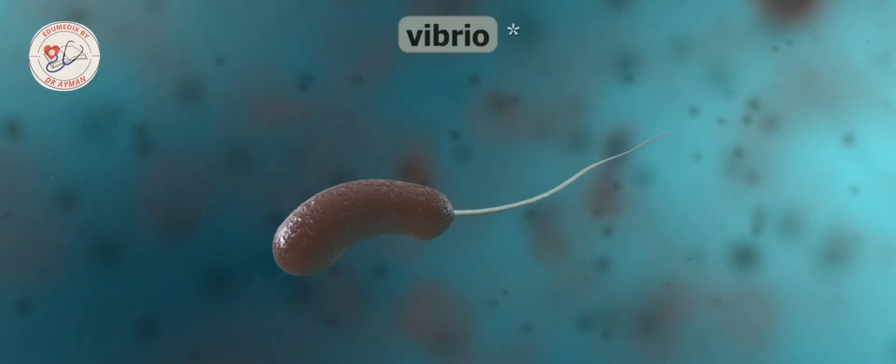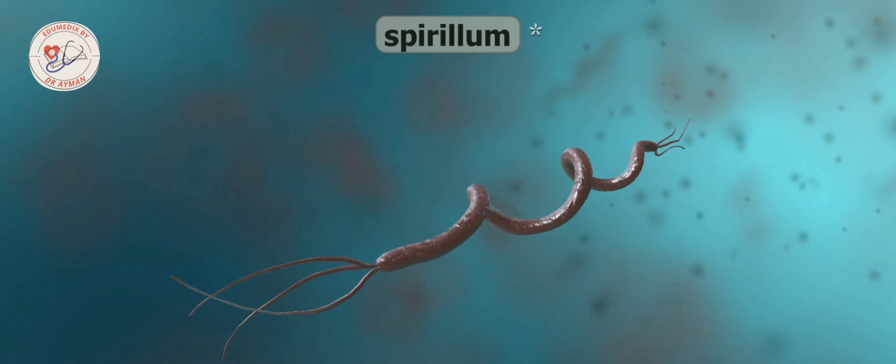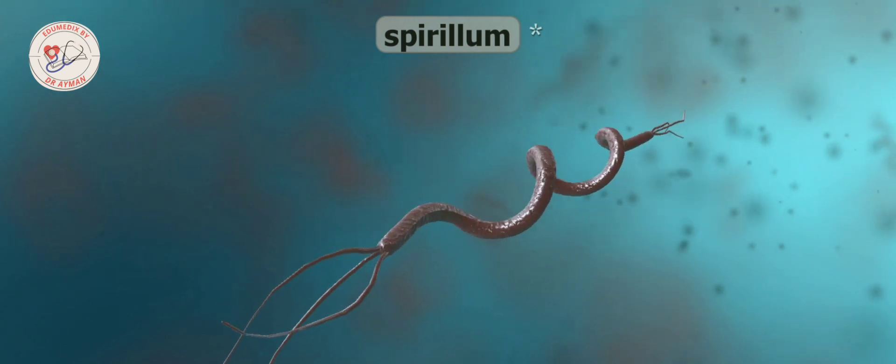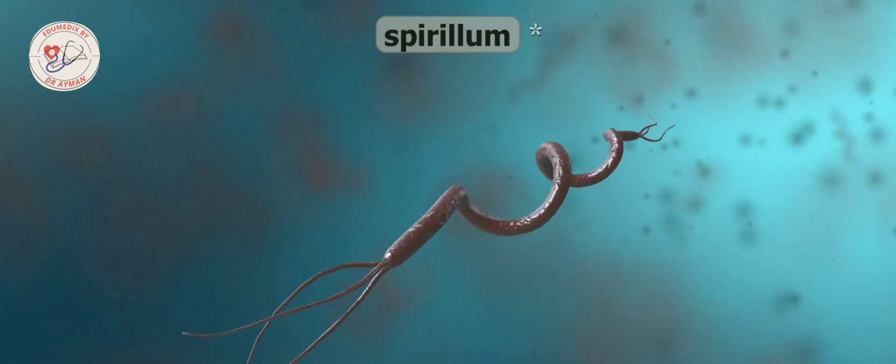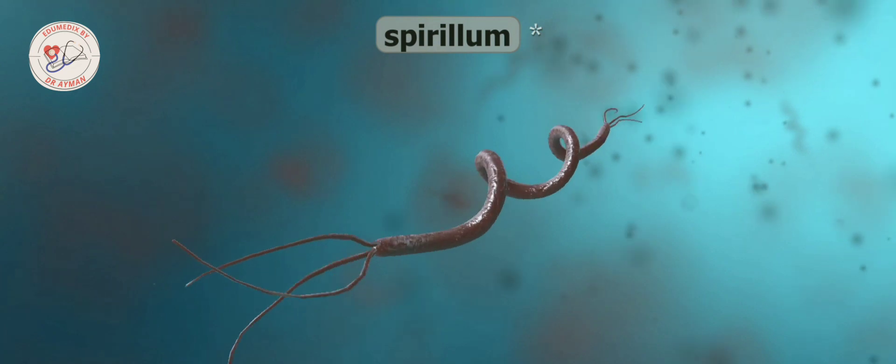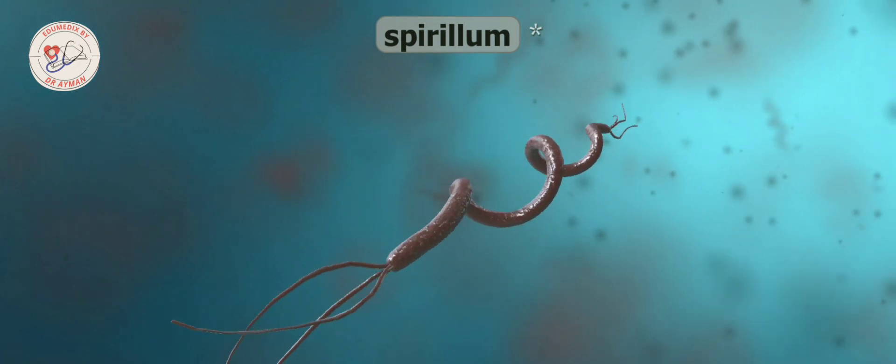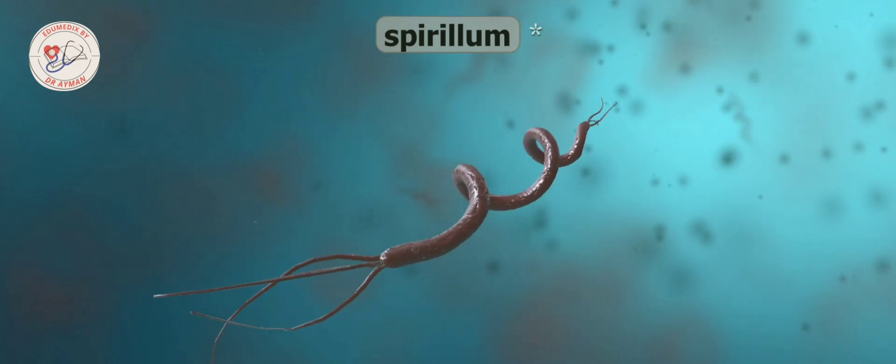Bacteria have an exceptional ability to adapt and reproduce, and this is why they are extremely widespread. They are capable of both asexual and sexual reproduction. If they reproduce through binary fission, which is a form of asexual reproduction, it results in a large number of individual bacteria cells.